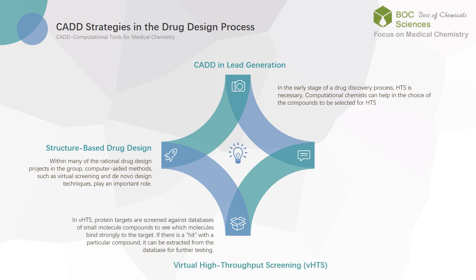Third, virtual high-throughput screening. In virtual high-throughput screening, protein targets are screened against databases of small molecule compounds to see which molecules bind strongly to the target. If there is a hit with a particular compound, it can be extracted from the database for further testing.